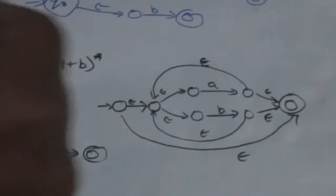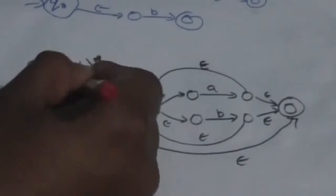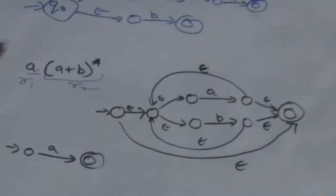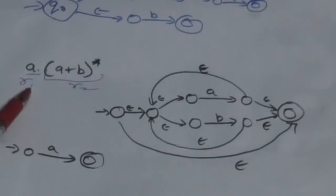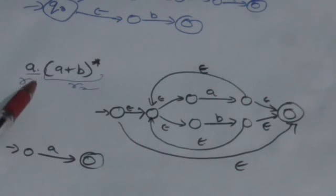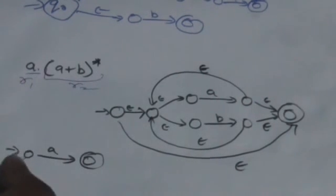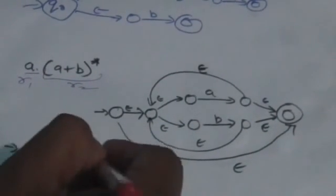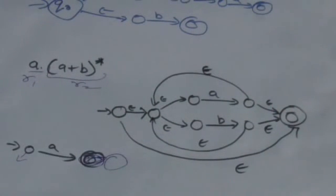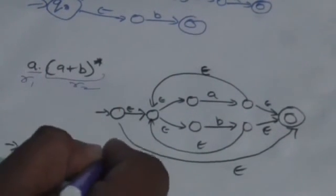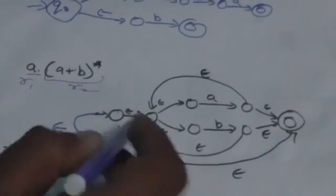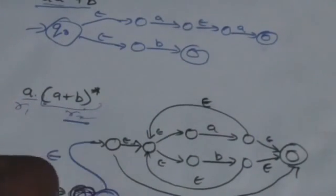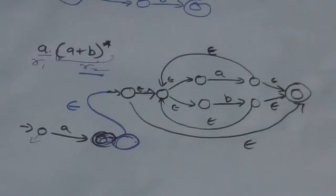For the concatenation construction: make the initial state of the new automaton, which will correspond to R1·R2, the same as the initial state of the finite automaton for R1. Then make the final state of R1 non-final, and from here add an empty transition to the initial state of the finite automaton corresponding to the regular expression R2.